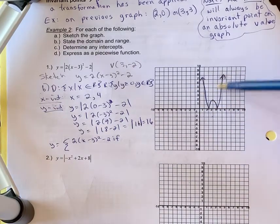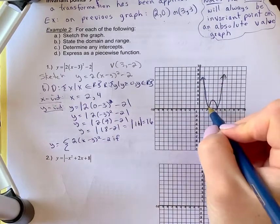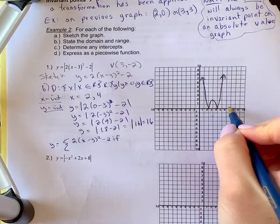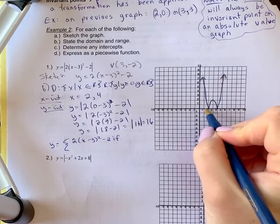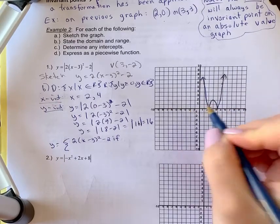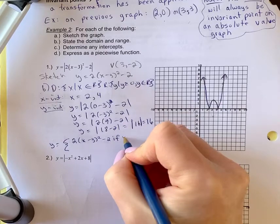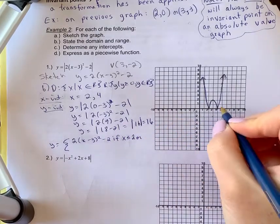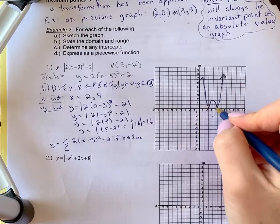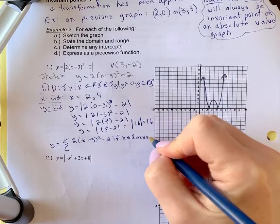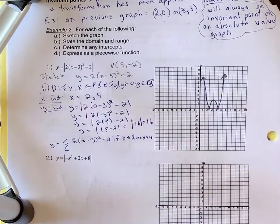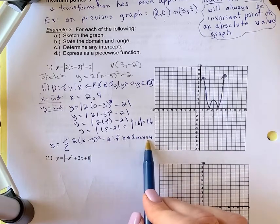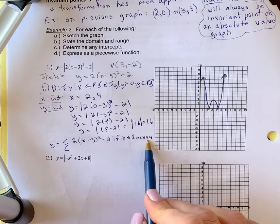So the part of the graph that didn't change was everything less than 2 and everything greater than 4. Between 2 and 4, it changed. So we're going to write everything less than 2. So we say if x is less than or equal to 2, or on the right-hand side or the right wing, everything is greater than or equal to 4. Your equal to signs will always go with the original graph because your x-intercepts don't change. They're invariant points.